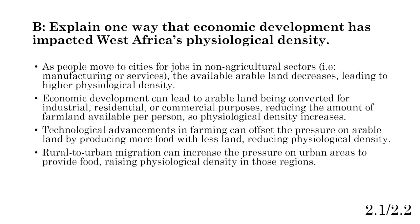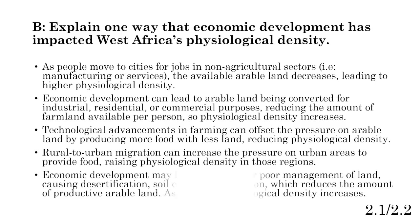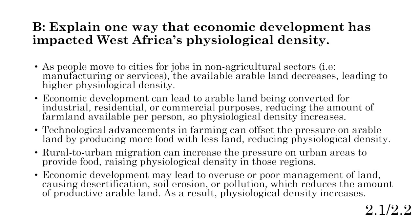Rural to urban migration can increase pressure on urban areas to provide food, raising physiological density as they preserve land to grow food for the dense population. Economic development may also lead to overuse or poor management of land — causing desertification, soil erosion, and pollution (water, air, soil) — reducing productive arable land and increasing physiological density. The overall trend is that physiological density increases as economic development occurs, the manufacturing sector grows, and farms decrease.